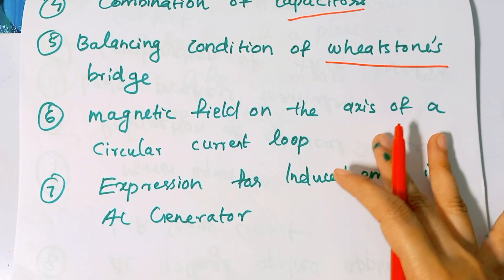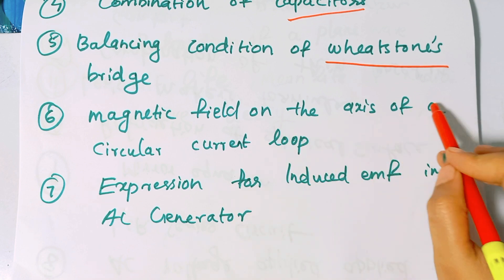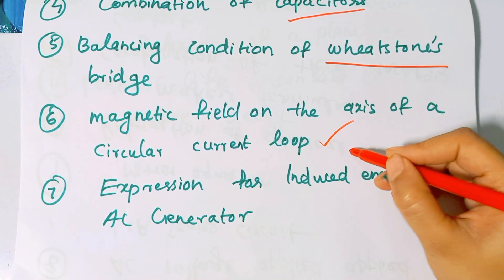In the fourth chapter, the important derivation is magnetic field on the axis of a circular current loop.